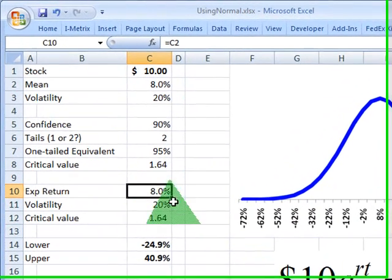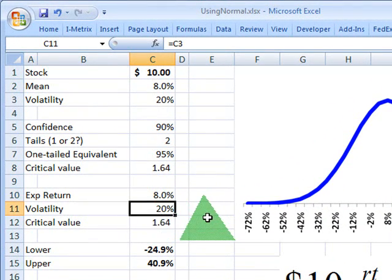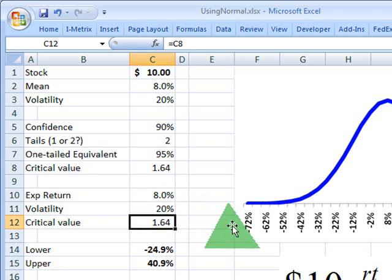So now I'll use that. 8% is my expected return on the stock. 20% of my volatility. 1.64 is my critical value.